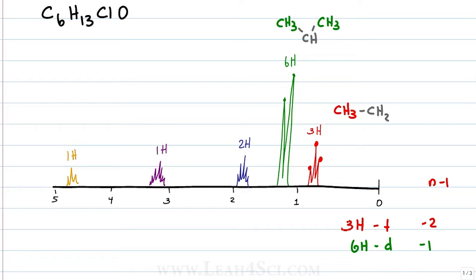I want to jump over to the purple peak real quick because this is a pattern that you have to learn to recognize. Anytime you have a six hydrogen doublet and a one hydrogen multiplet which is this mass over here, you should recognize this as an isopropyl group.